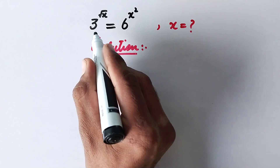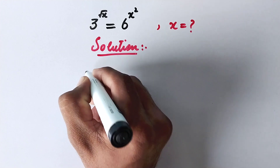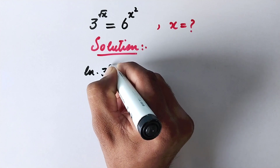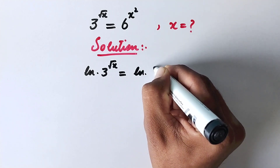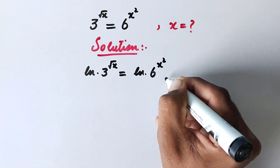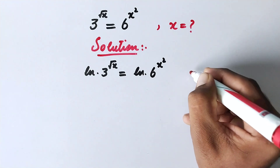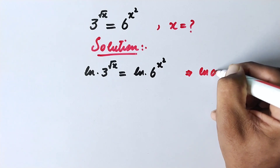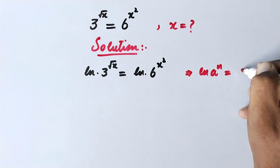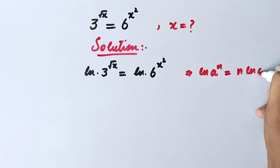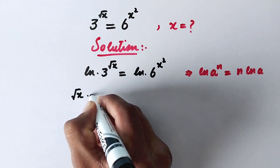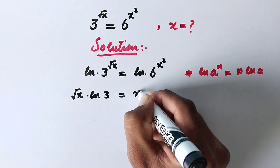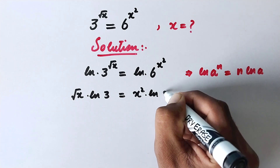In the first step we will take natural log on both sides of the equation. So we will write ln of 3 to the power square root of x is equal to ln of 6 to the power x squared. As we know, the property of log is ln of a to the power n is equal to n times ln of a. So the power comes before the log, giving us: square root of x times ln(3) is equal to x squared times ln(6).